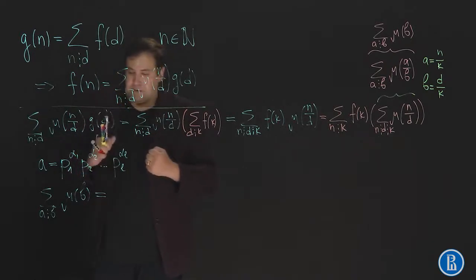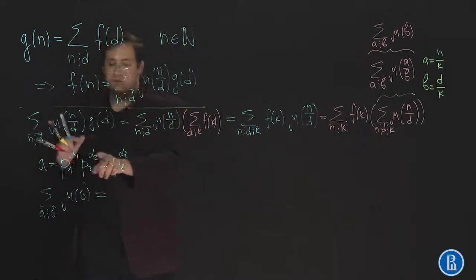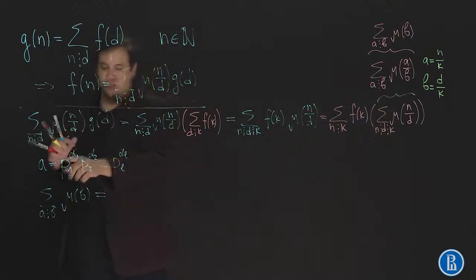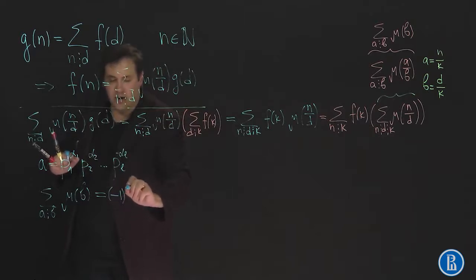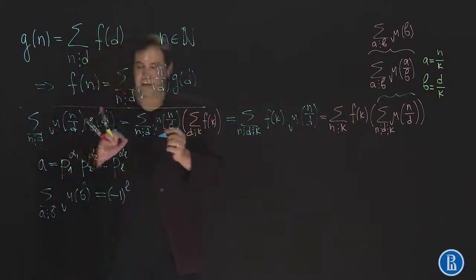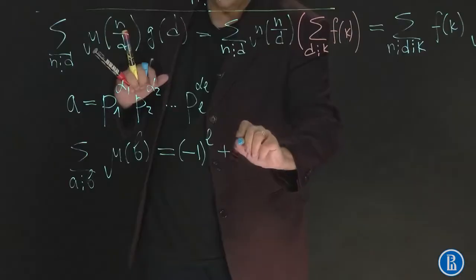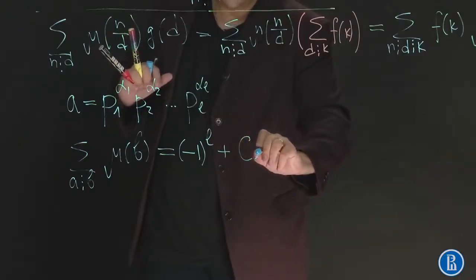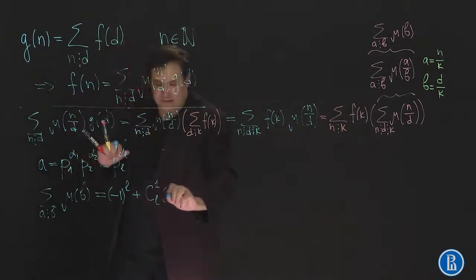Okay, in this case, we know that there is exactly one divisor of a that contains all these prime numbers. It's the product of p1, p2, and so on, pL. And Möbius function in this number is equal to minus 1 to the power of l. So there are divisors of a that consist of l minus 1 prime factors. But there are several such divisors exactly this amount of such divisors.